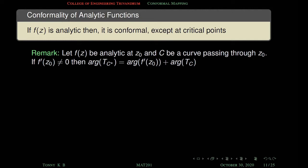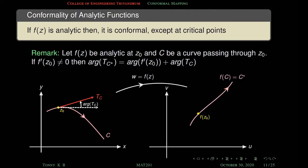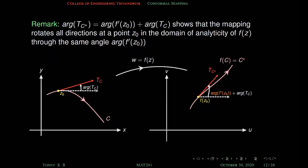This remark is the core concept of the proof and will be useful in higher-level competitive exams. Let f(z) be analytic at z₀ and let C be a curve passing through z₀. If f'(z₀) is not equal to zero — meaning z₀ is not a critical point — then arg(tC*) equals arg(f'(z₀)) plus arg(tC), where arg(tC) is the angle between tangent tC and the x-axis, and arg(tC*) is the angle between the image tangent and the u-axis. This holds for all curves passing through z₀, meaning the mapping rotates all directions at z₀ through the same angle arg(f'(z₀)).